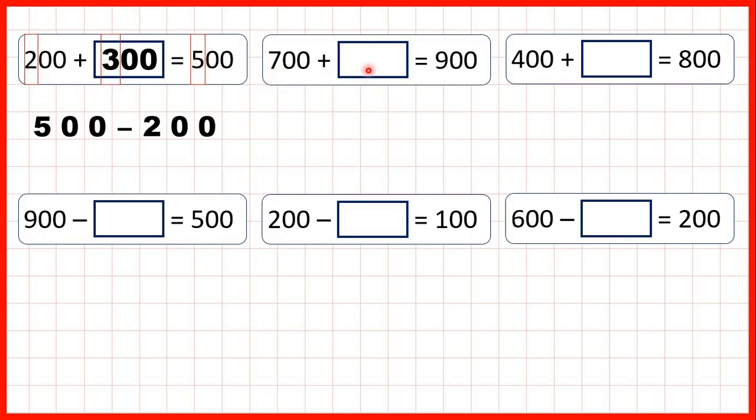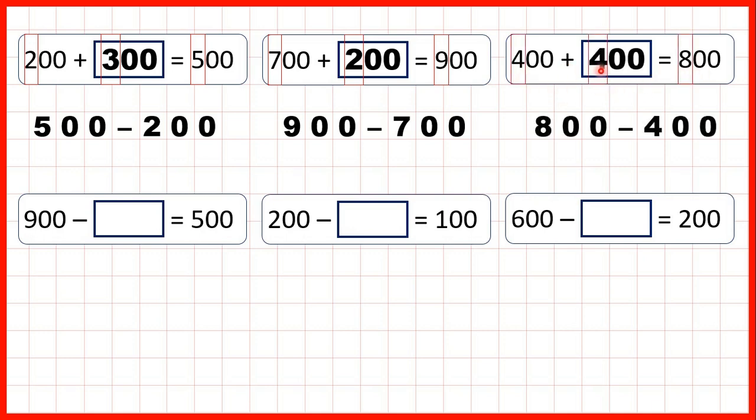Now 700 plus something equals 900. So here we can do the subtraction, and we get 200, because 7 plus 2 is 9. And now 400 plus something is 800, our missing number is 400, because 4 plus 4 is 8.